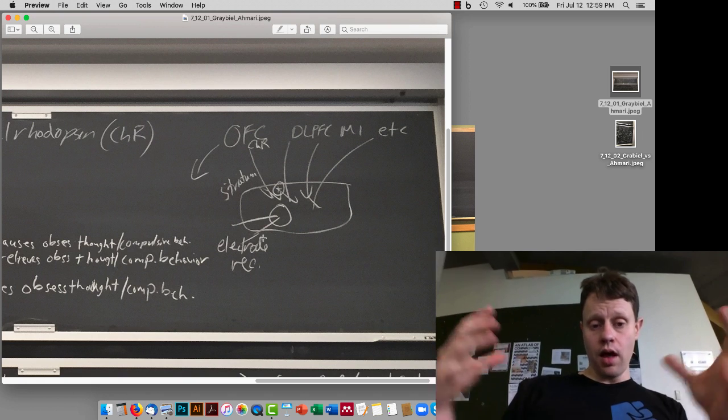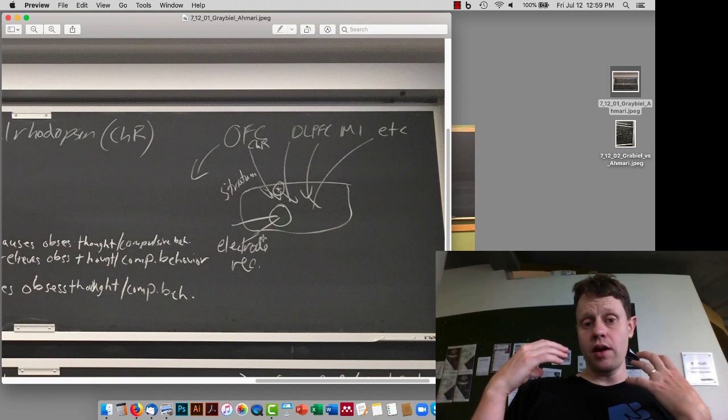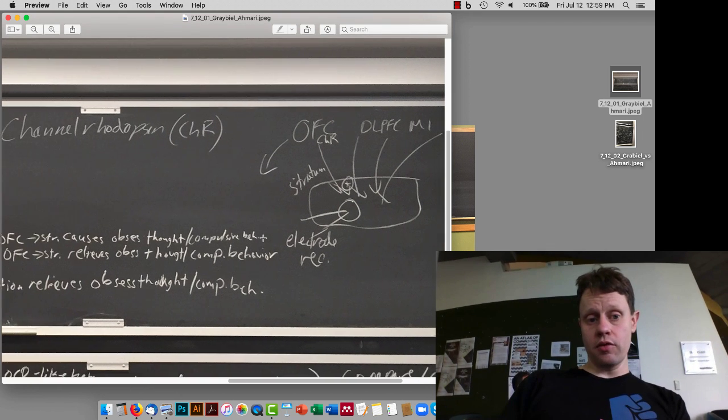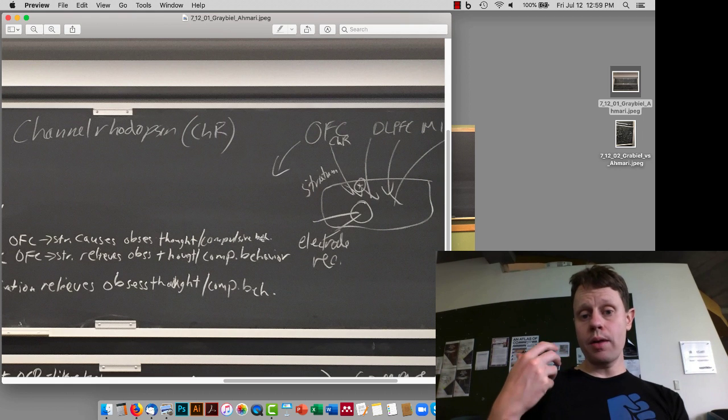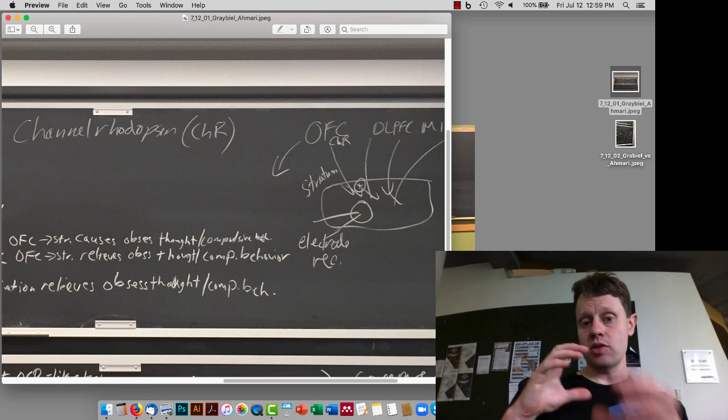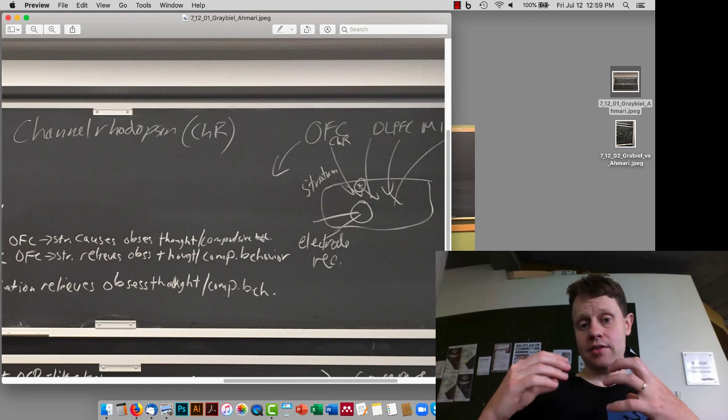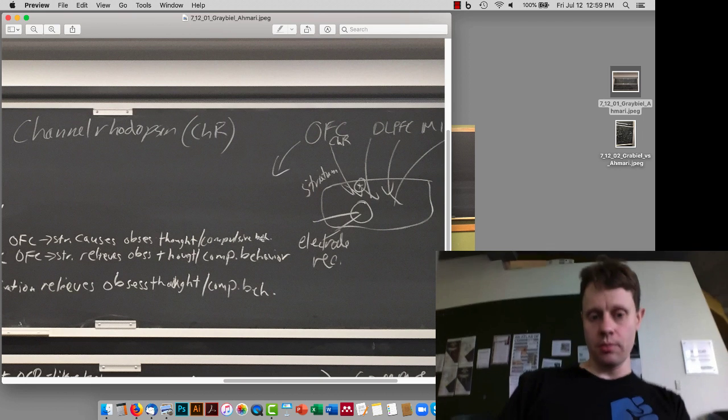One useful tool when a lot of different axons are all coming in together from different brain areas, and you want to figure out what is the specific function of one of those sets of inputs, is channelrhodopsin. This is like electrical stimulation because you can turn on axons, but instead of electrical stimulation which gets any nearby axons, this is going to specifically activate the axons of the cells where you put the channelrhodopsin, in this case the orbital frontal cortex.